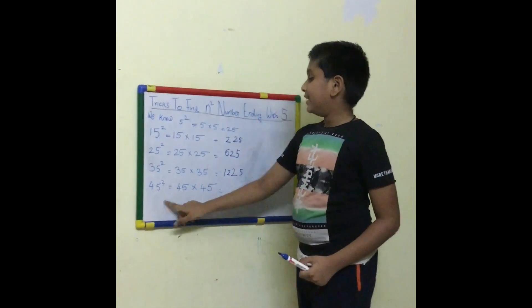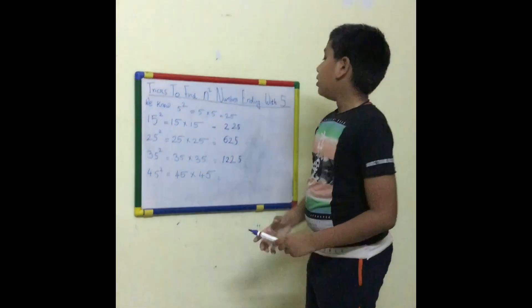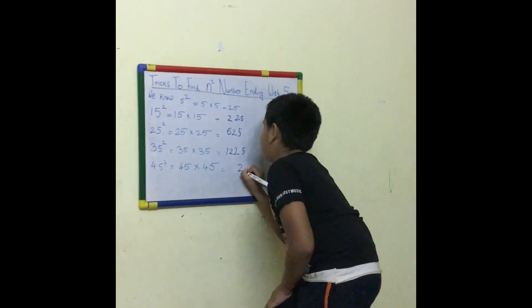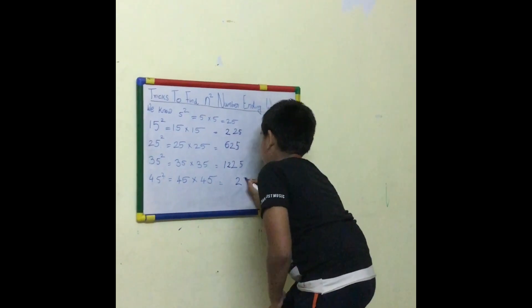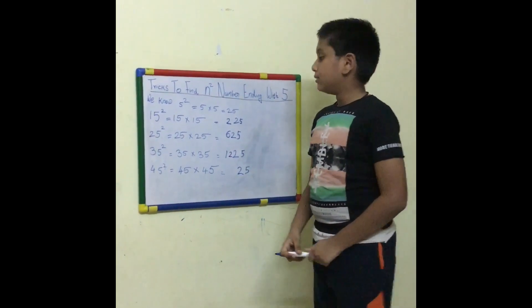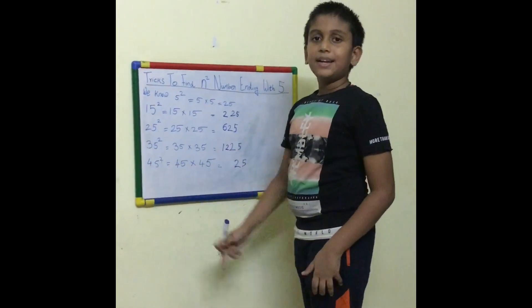45 squared is 45 into 45. So we know that we have to keep 25. Then 4's successor is 5. 4 into 5 is 20.